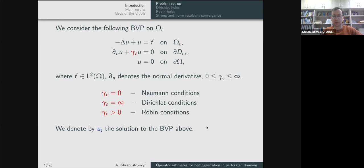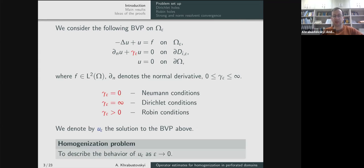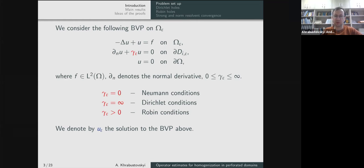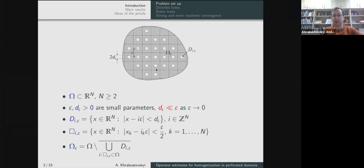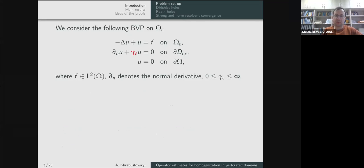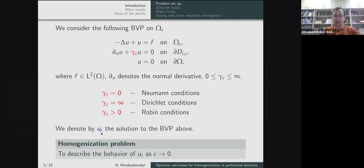I denote by u_epsilon the solution to this boundary value problem. The question we are interested in: can we describe the behavior of the solution when epsilon goes to zero? As epsilon goes to zero, we have more and more holes located more and more densely in space. We hope that in the limit, u_epsilon will be close to the solution of some epsilon-independent problem in the unperforated domain omega — and this is indeed true, a known result.